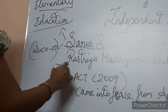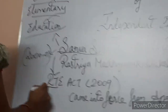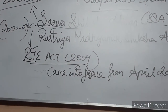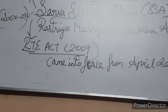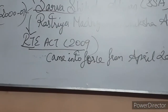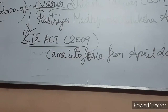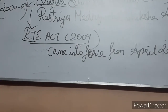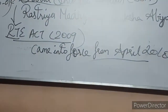In the Sarva Siksha Abhiyan, they introduced the RTE Act in 2009 — that is, the Right to free and compulsory Education for children up to the age of 6 to 14 years. It came into force from April 2010.